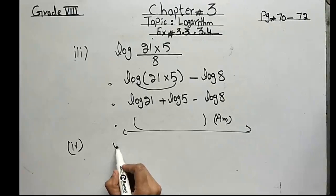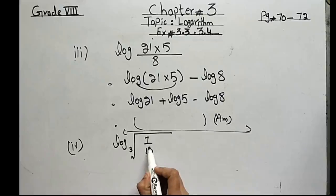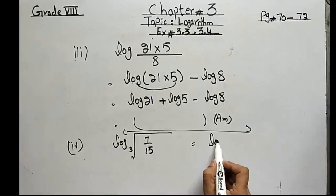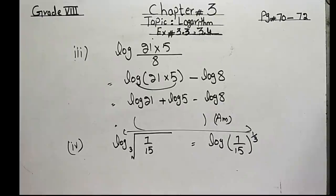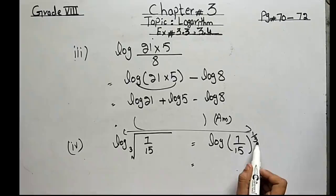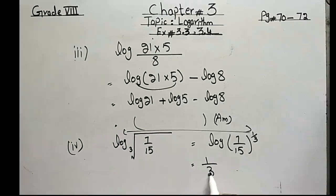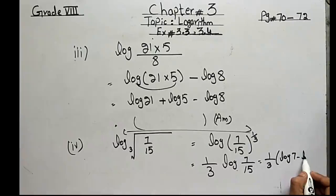The fourth part is log of the cube root of (7/15). The cube root can be written as (7/15)^(1/3). According to the third law of logarithm, the power is written in front of the log first: (1/3)·log(7/15). Then apply the log on the division terms: (1/3)·[log(7) − log(15)].